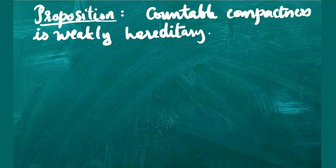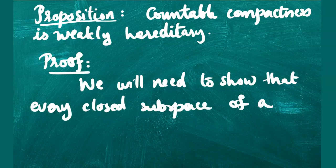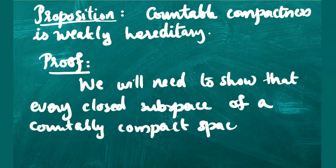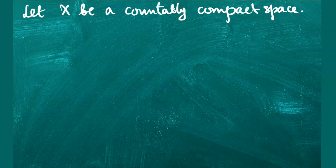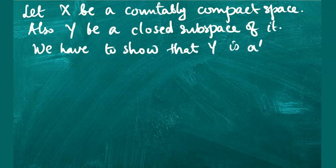Proposition: countable compactness is weakly hereditary. We need to show that every closed subspace of a countably compact space is also countably compact. Assume that X is a countably compact space and Y is a closed subspace of X. We have to show that Y is also countably compact.